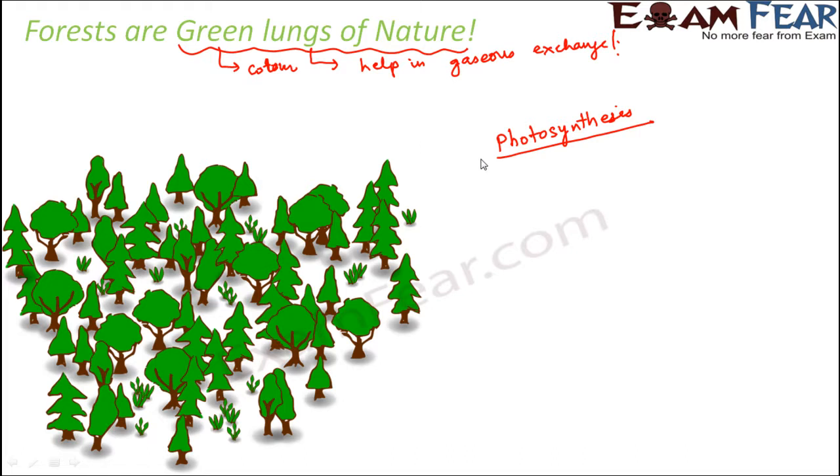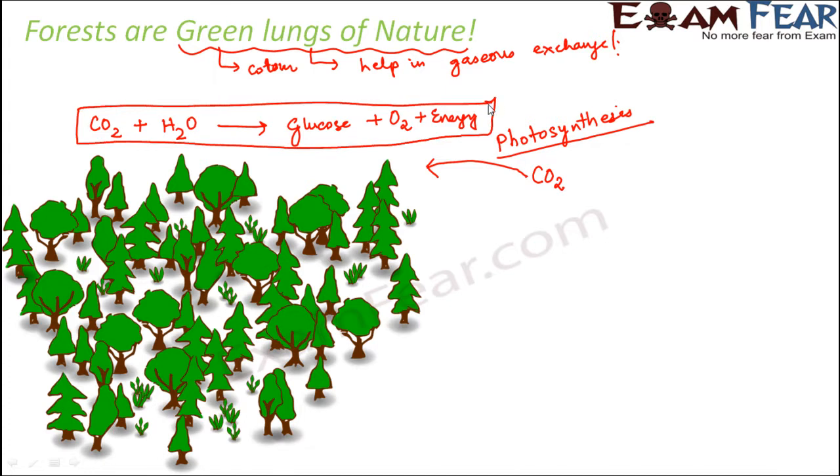While performing photosynthesis, plants take in carbon dioxide, which is a raw material for photosynthesis. During photosynthesis, carbon dioxide and water combine together to form food in the form of glucose, and oxygen is released during the process. So plants have to take in carbon dioxide, and as a product of photosynthesis, oxygen will be released to the atmosphere.